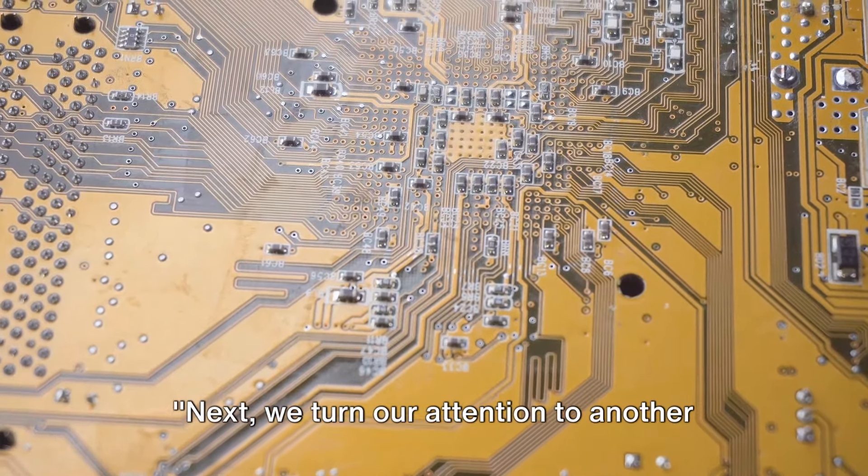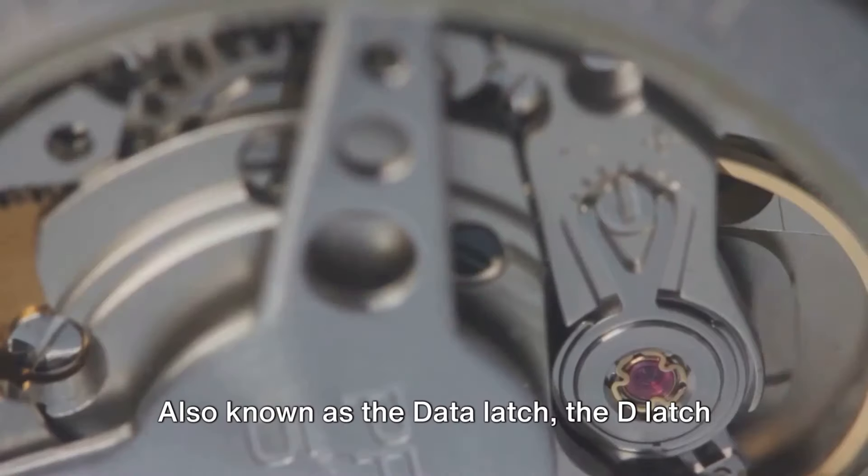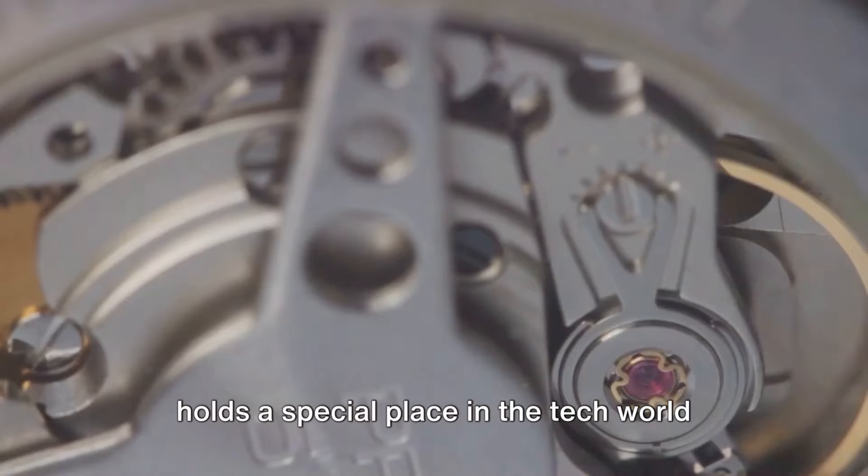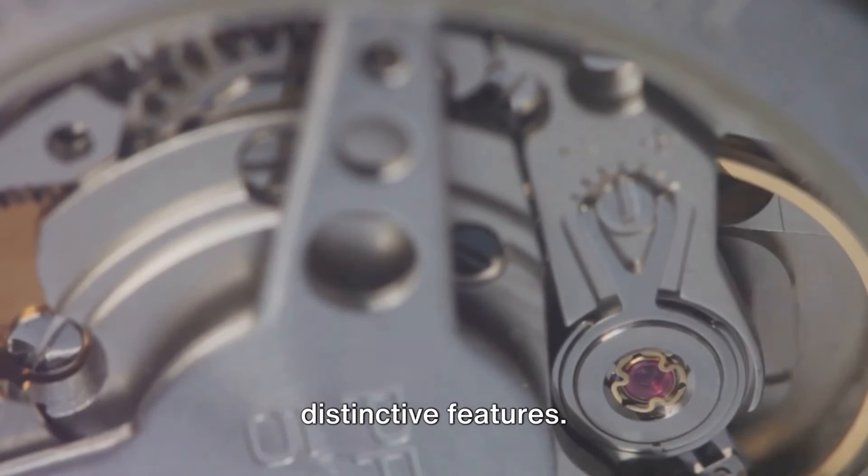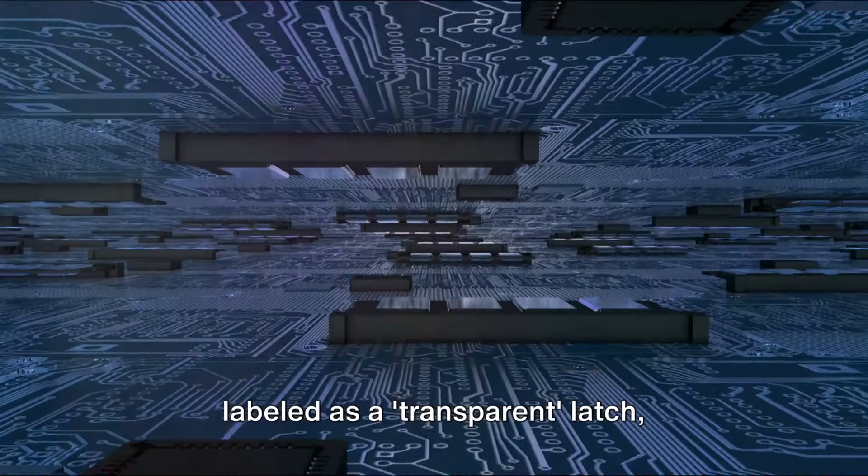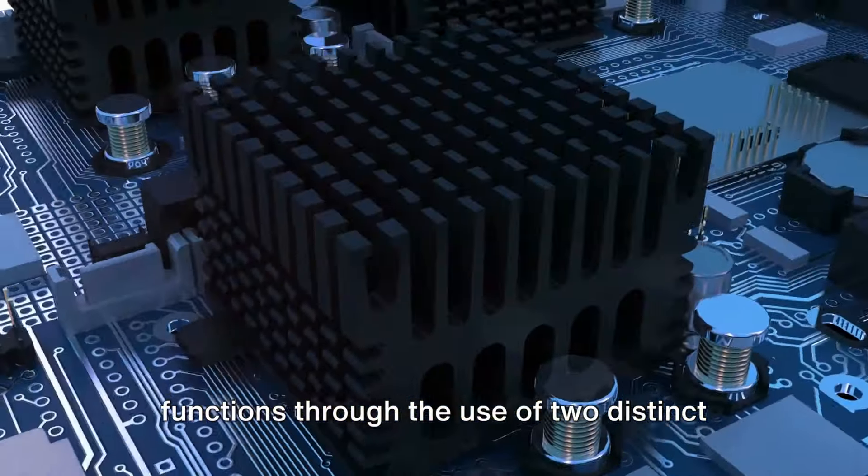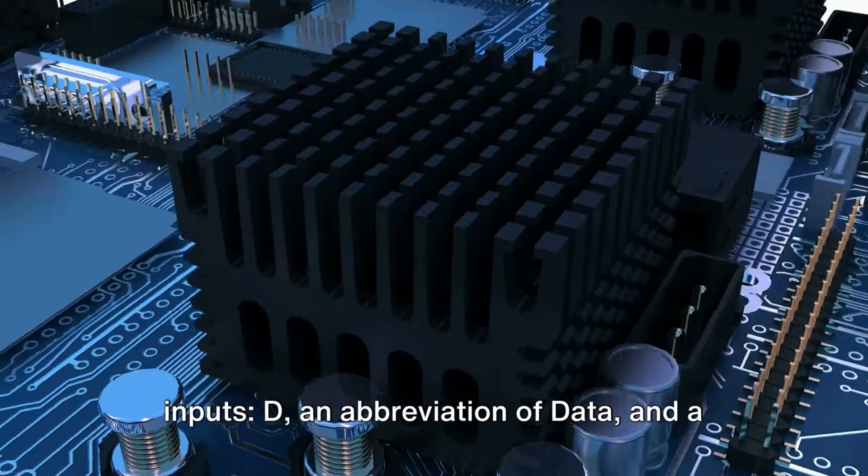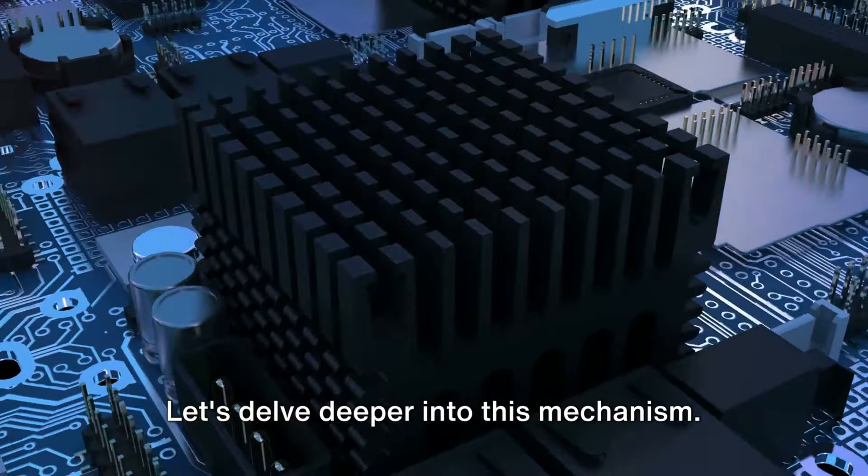Next, we turn our attention to another pivotal latch type, the D-Latch. Also known as the Data Latch, the D-Latch holds a special place in the tech world due to its unique mode of operation and distinctive features. This latch type, often endearingly labeled as a transparent latch, functions through the use of two distinct inputs, D, an abbreviation of data, and a clock signal. Let's delve deeper into this mechanism.